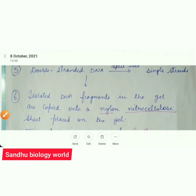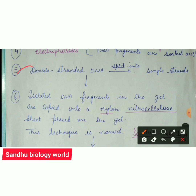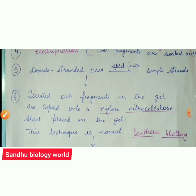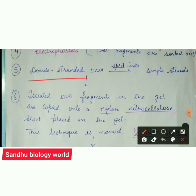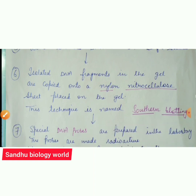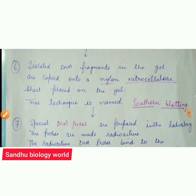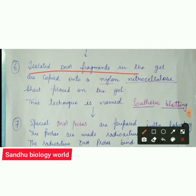The fifth step is DNA denaturation. The double-stranded DNA is split into two single strands. The isolated DNA fragments in the gel are then copied onto a nylon or nitrocellulose sheet placed on the gel.